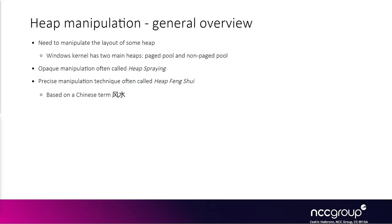In general, there are two common heap manipulation techniques: heap spraying and heap feng shui. For heap spraying, the idea is you just allocate a ton of stuff on the heap and the end goal is to have some predictable address allocated. This technique might help you bypass ASLR because from then on you know something you control is at a specific address. The second technique is heap feng shui, which is a more precise and interesting technique based on the Chinese term.